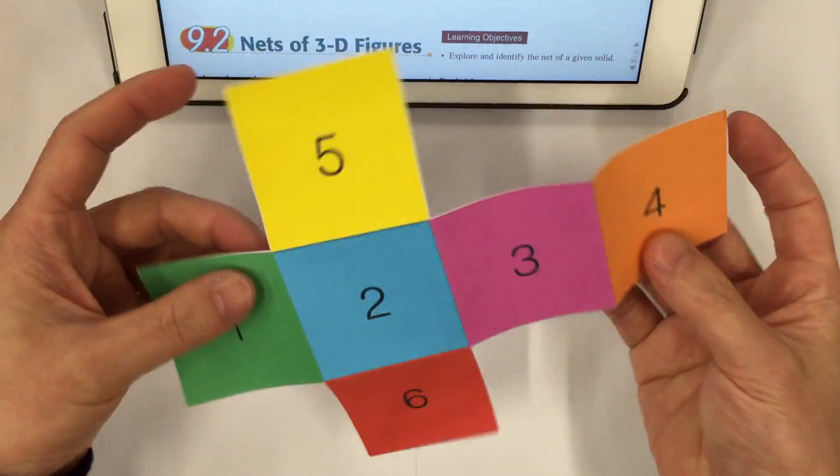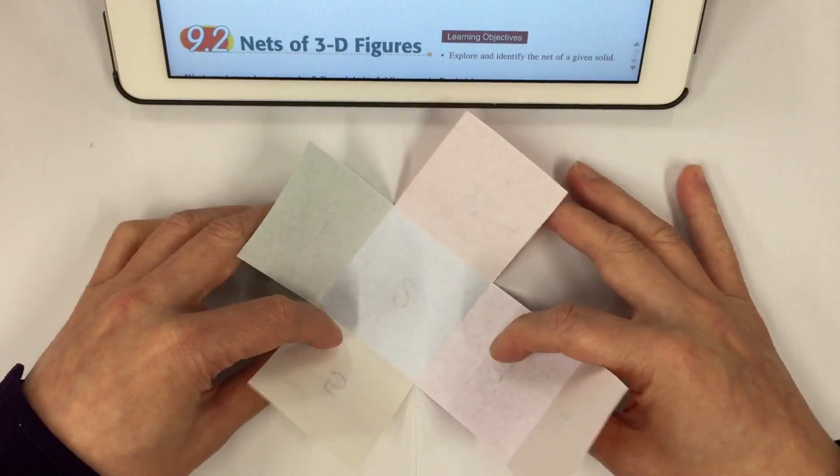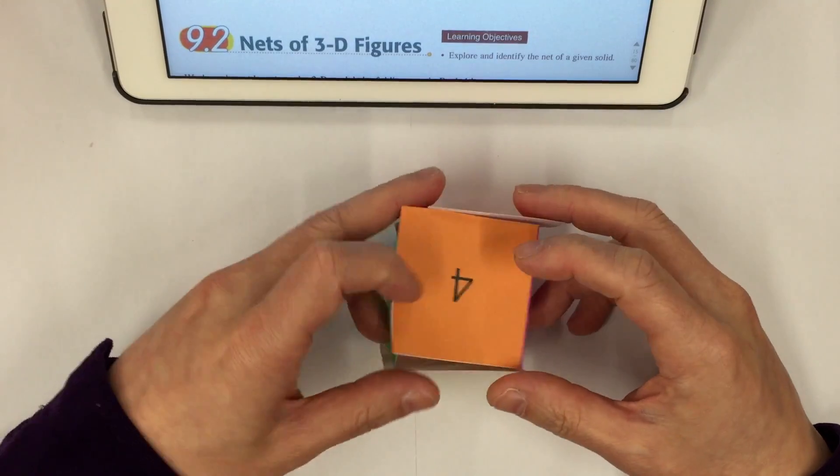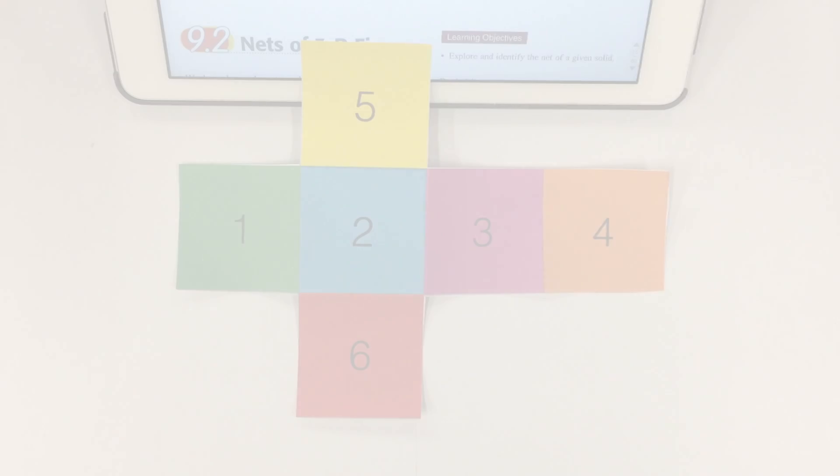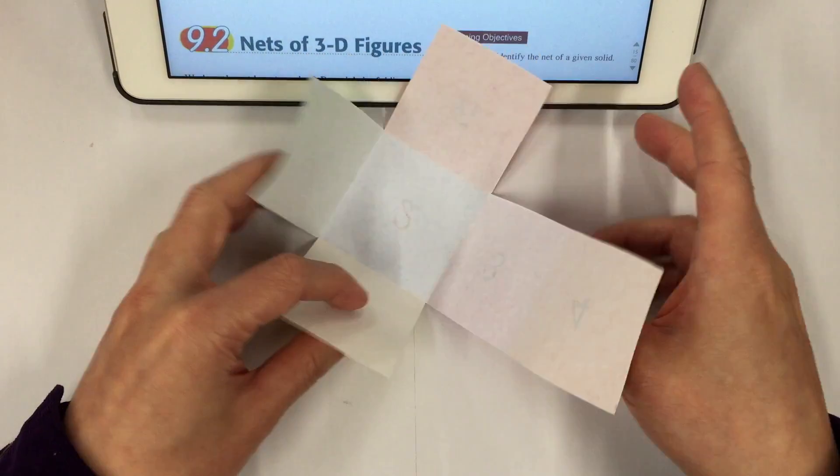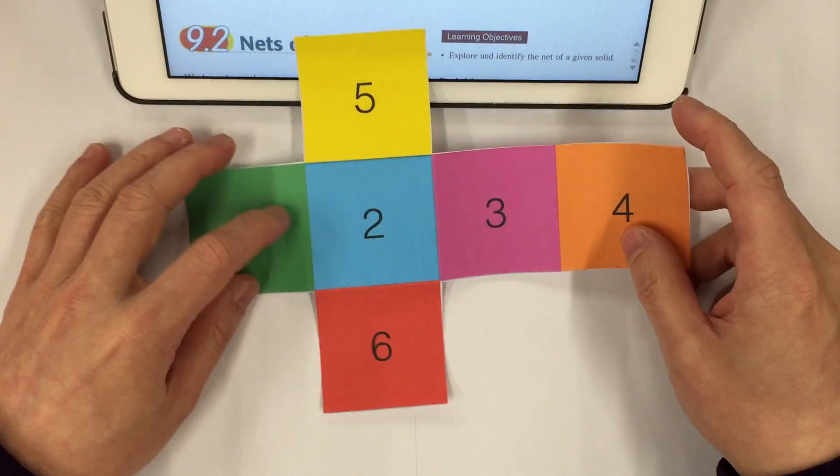So this is a very typical example of the net of a cube, and if I fold it in this way, then this will become a cube in the end. So in the folding process, if this is the net of a cube and I fold it into a three-dimensional cube, can you tell me which will be the opposite faces of each other?